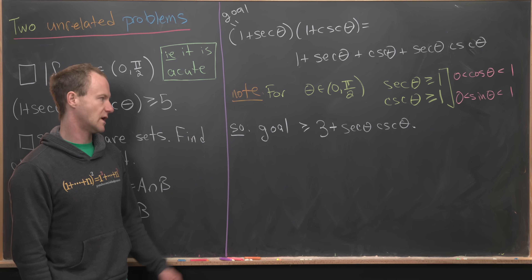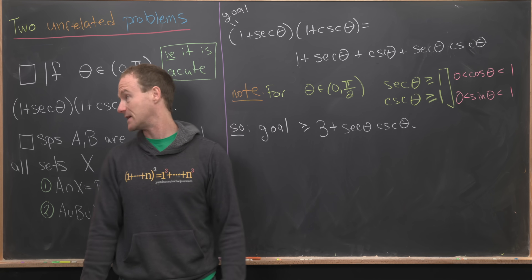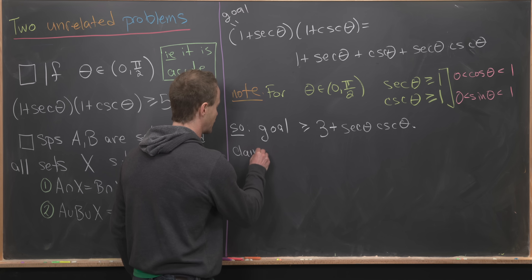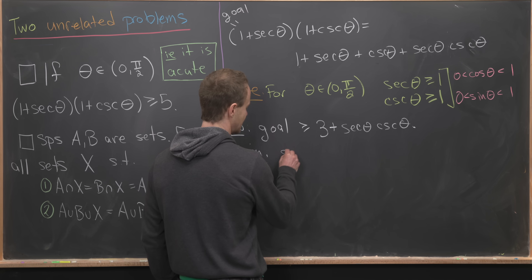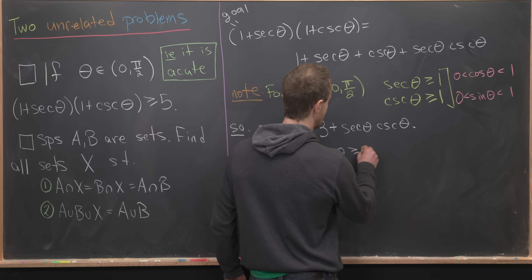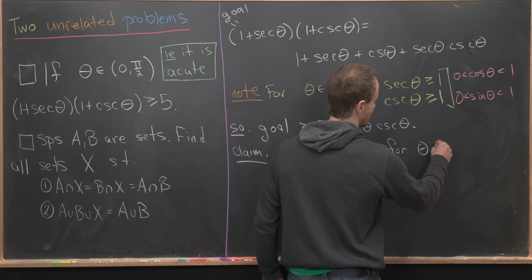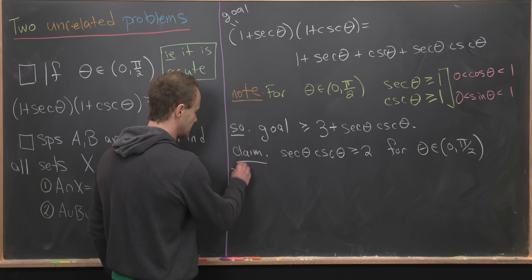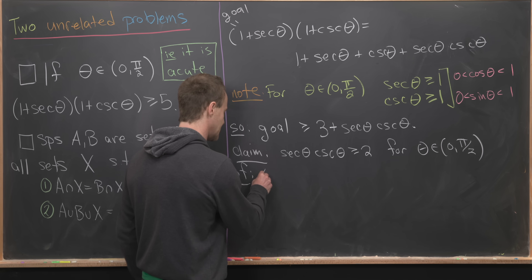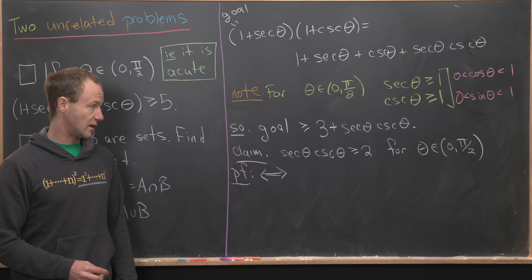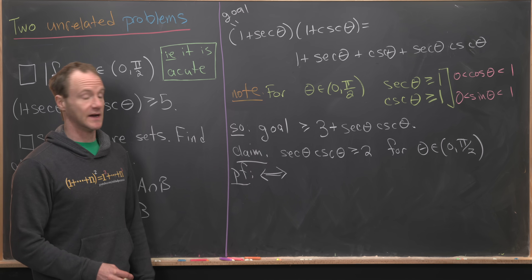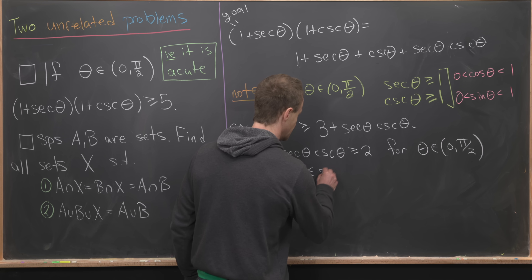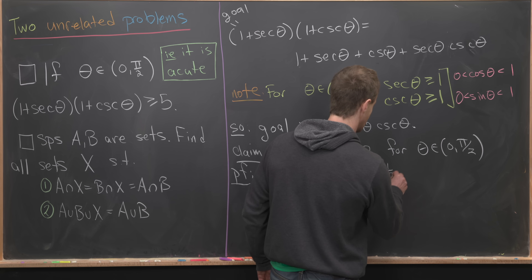To finish the proof, it suffices to show that sec θ · csc θ ≥ 2 for θ in (0, π/2). This is equivalent to showing 0 ≤ sin θ · cos θ ≤ 1/2. The lower bound is obvious since both sine and cosine are positive on this interval, so we only need to prove the upper bound.